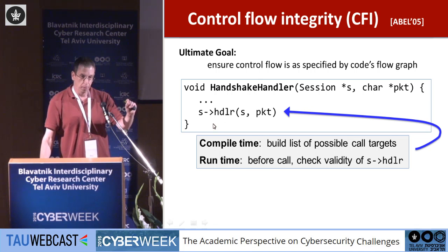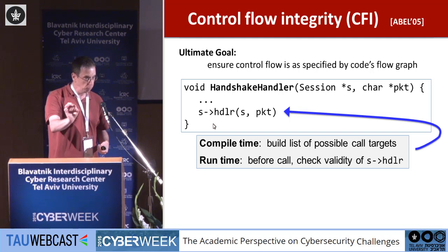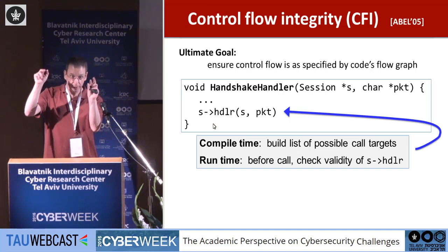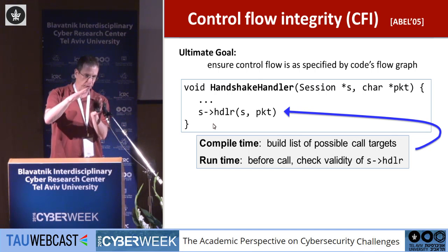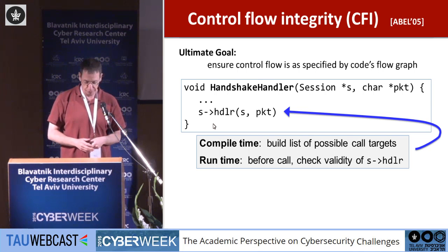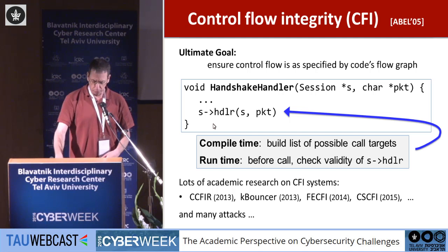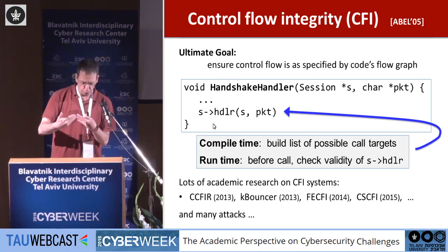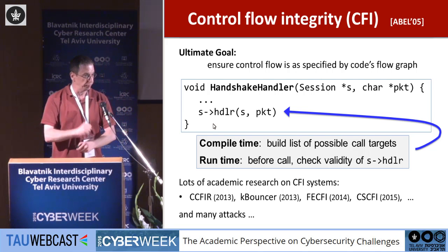We convert an exploit — something that would allow the attacker to take control of our server — into what's called a denial-of-service attack. Instead of giving the attacker control of our program, all the attacker can do is crash the program. Servers have watchers so that if they crash, they're automatically restarted and the service is not really affected, but the attacker cannot take control of the server. This is the idea of control flow integrity, and there are tons of academic papers on this — it's a very active research area, both proposing CFI systems and also trying to attack them.